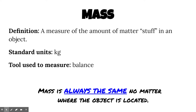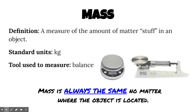No matter where you are in the universe, your mass is always going to be the same. If we sent you up in a rocket ship to Pluto, your mass isn't going to change. We're not going to take more stuff out of you — the amount of matter in that object is going to be the same no matter where it's located. Our mass is going to stay the same. Here's a simple picture of our balances; we have very similar ones here at the high school.